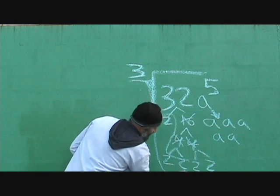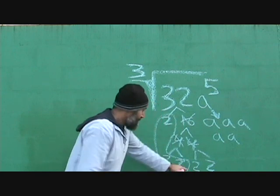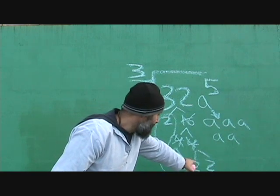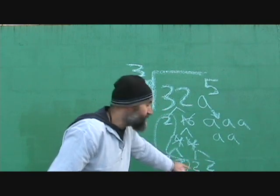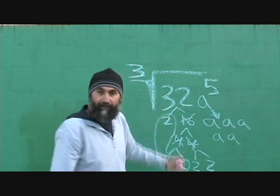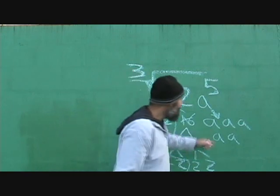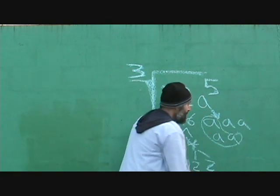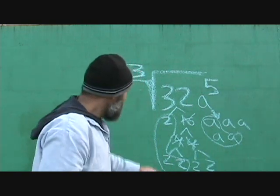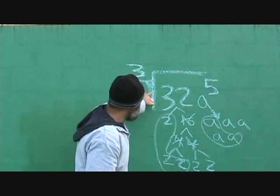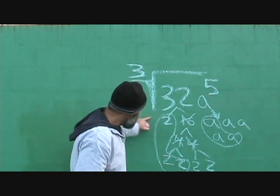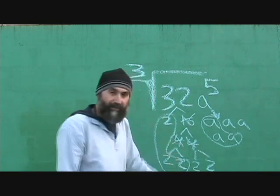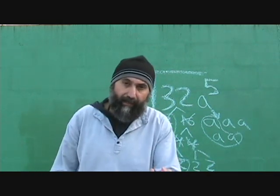We've got three twos here. We don't have another two to go with the remaining two twos down there, so we're going to leave those alone because we can't combine them into triplets. Over here, we've got three A's and two A's left over. So these two twos come out of the symbol as a single two.